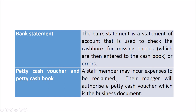Moving on to other business documents: a bank statement is a statement of account, making it a business document. It's used to check the cash book for missing entries — you do a reconciliation between the bank statement and the cash book. This is covered more in Principles of Bookkeeping Controls, but it's highlighted here because the cash book needs to be both the book of prime entry and the ledger account, since the bank reconciliation requires ticking items between the cash book and the bank statement.